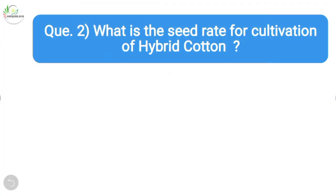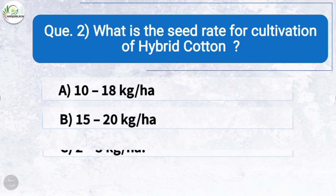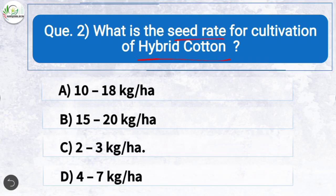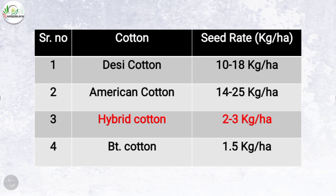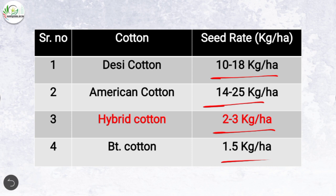Question two: What is the seed rate for cultivation of hybrid cotton? The correct answer is option C: 2 to 3 kg per hectare. The seed rate for desi cotton is 10 to 18 kg per hectare, for American cotton it is 14 to 25 kg per hectare, for hybrid cotton it is 2 to 3 kg per hectare, and for BT cotton it is around 1.5 kg per hectare.